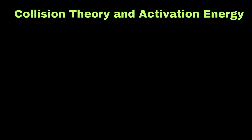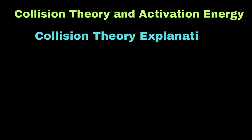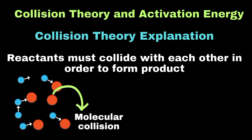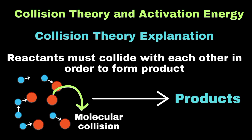According to collision theory, during a chemical reaction, reactants must collide with each other in order to change into products. For a reaction to occur, molecules must collide with sufficient energy to break and form new bonds, and the reactants must also have the correct orientation to lead to a reaction.